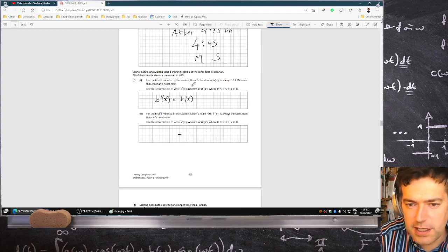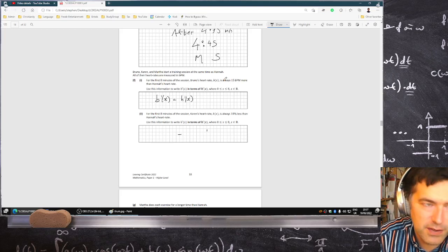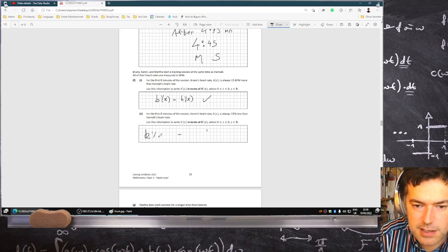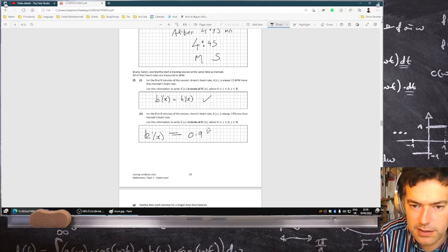Then to the next part here, Bruno's heart rate is 15 more. But if you add 15 more on and differentiate it, there's no difference. And then here, Karen's is 10% less. So that's just going to be 0.9. So that's those two there.